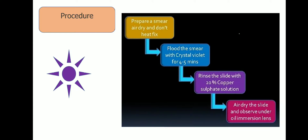Procedure: First, prepare a smear on a clean grease-free slide. Air dry and do not heat-fix. If heat-fixing is done, this causes a change in morphology of the bacterial capsule. Therefore, heat-fixing is avoided in case of the capsule staining method.